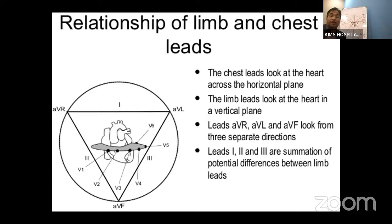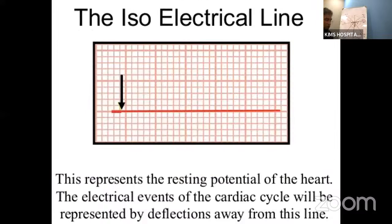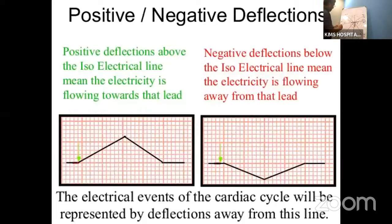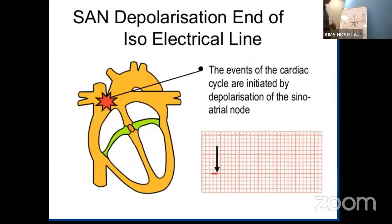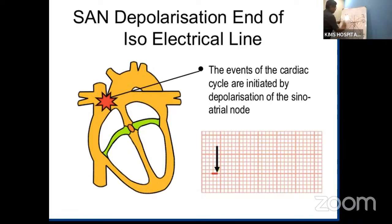Basic electrical rules: a flat line means no stimulus and zero potential. A positive deflection means the electrical vector is coming toward that lead. A negative deflection means the vector is going away from that lead. You need to understand the hexaxial (Cartesian) system with the six leads — Lead I, II, aVF, III, aVR, and aVL — and their angles. When there is no electrical activity, the line will be flat (isoelectric).